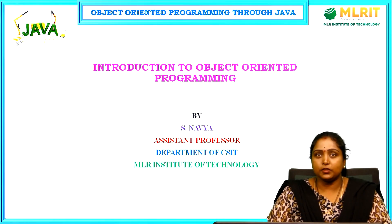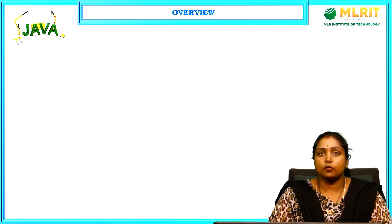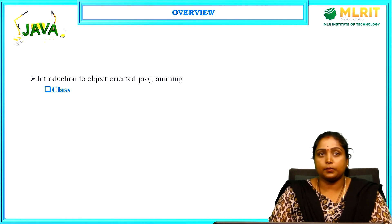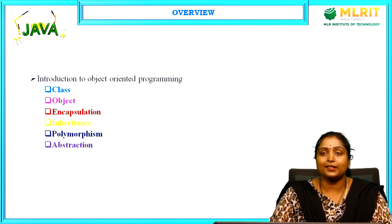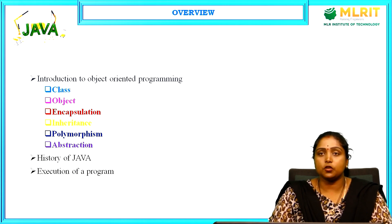Hello everyone, welcome to the session of Object Oriented Programming through Java. Today we are discussing an introduction to Object Oriented Programming. We will cover what is OOP and its concepts: class, object, encapsulation, inheritance, polymorphism, and abstraction. We will also see the history of Java as well as the execution of a basic Java program.